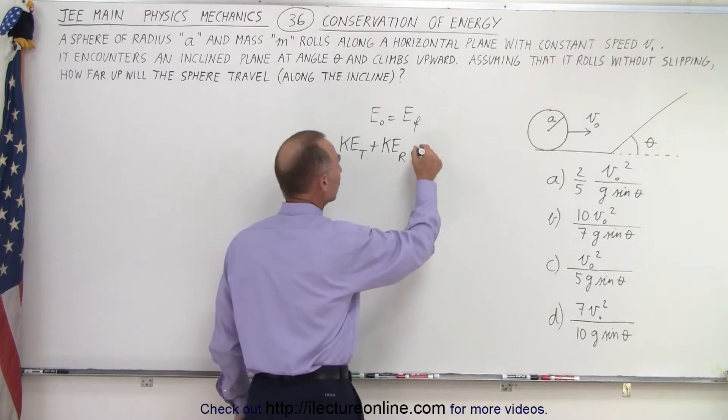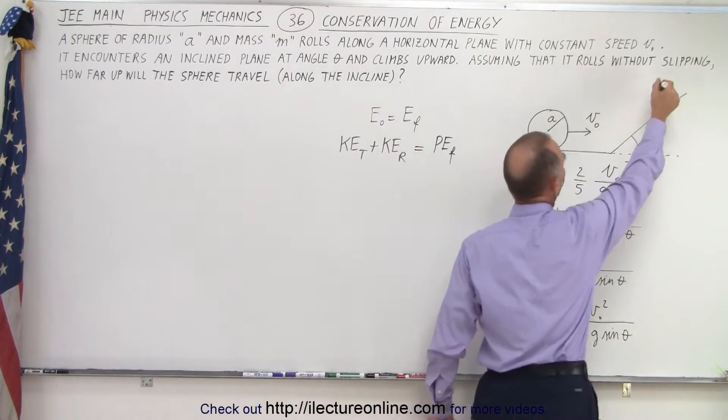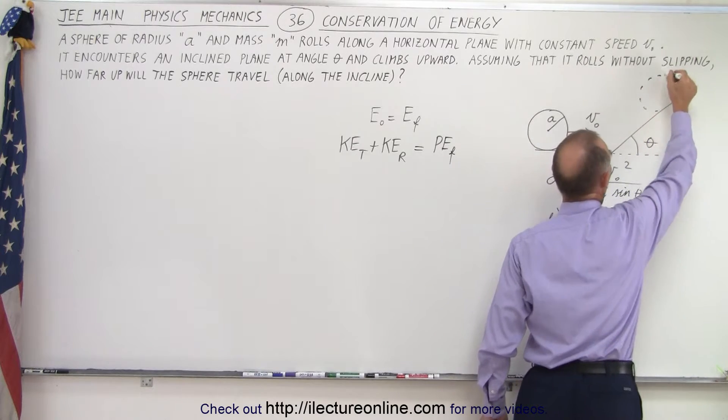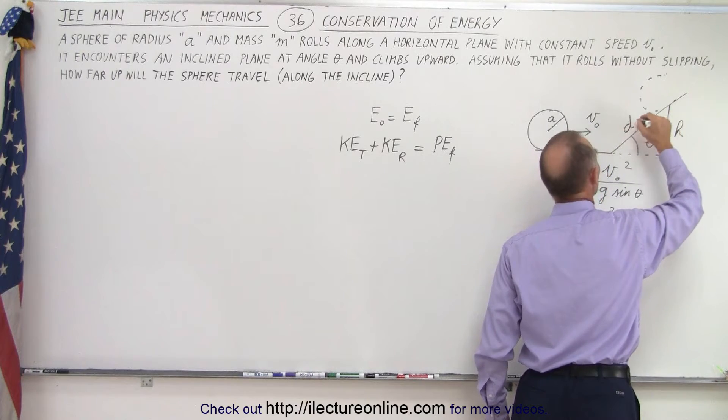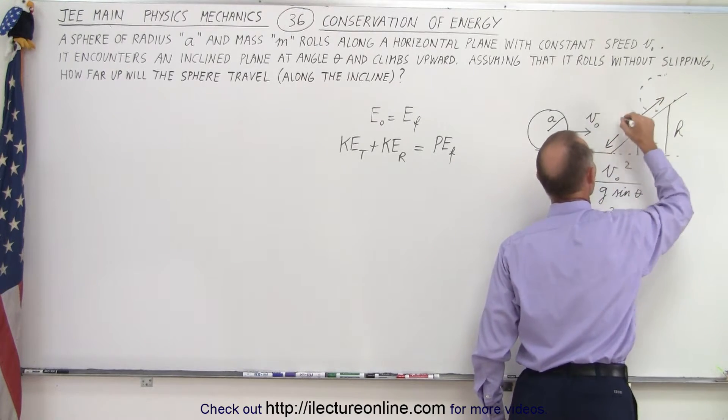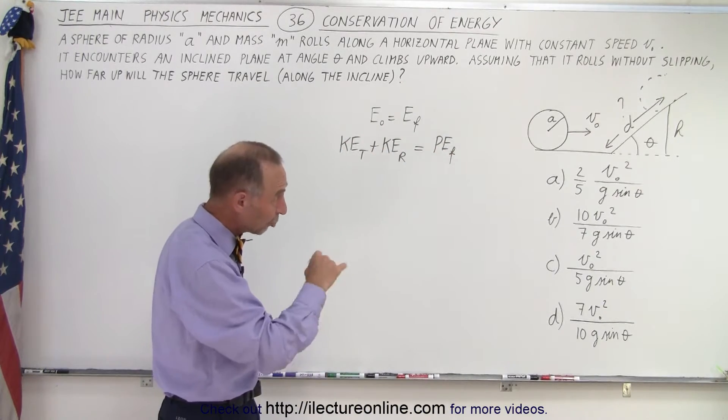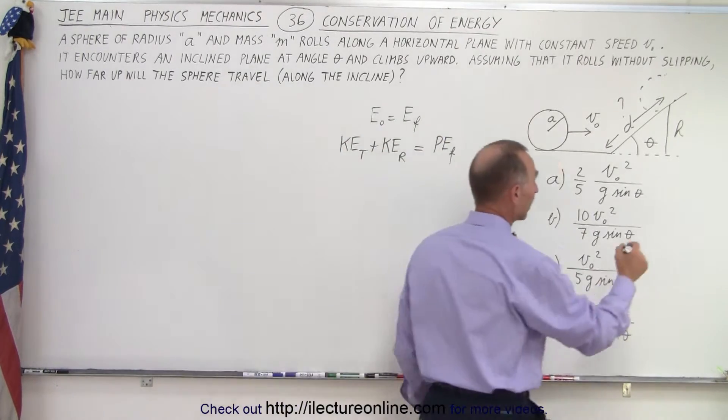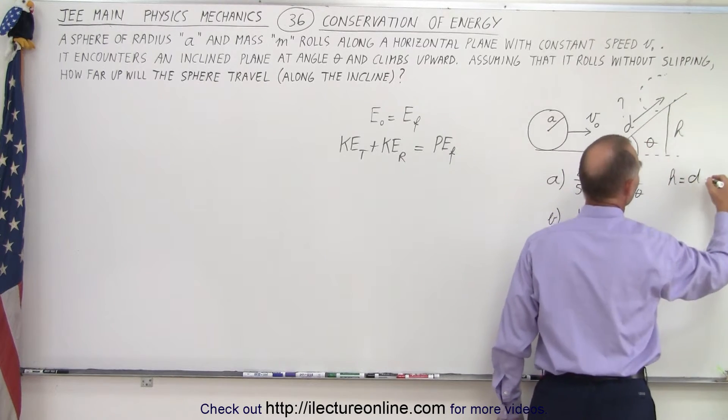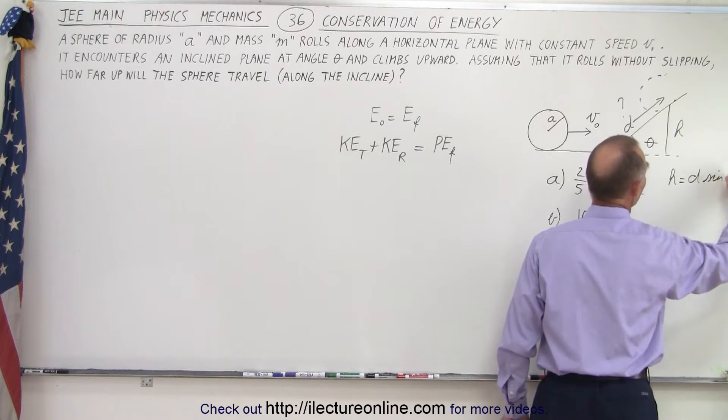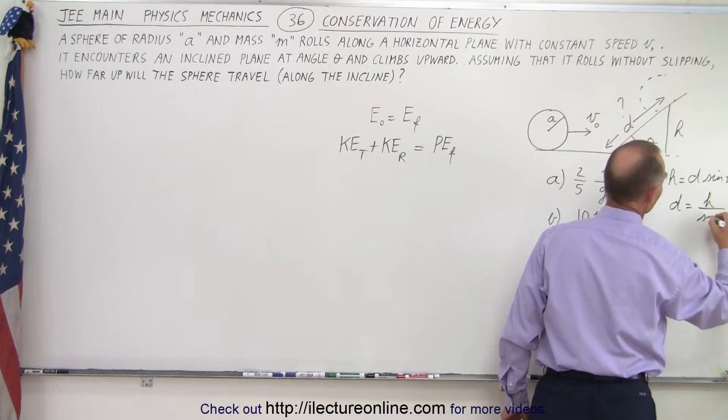And that must equal the potential energy final that it gains, because at some point, the sphere will be at some height. We'll have a height h that's been obtained, but we need to find the distance d. So we need a relationship between h and d. We can write that h is equal to d times the sine of the angle theta, which means that d is equal to h divided by the sine of theta.